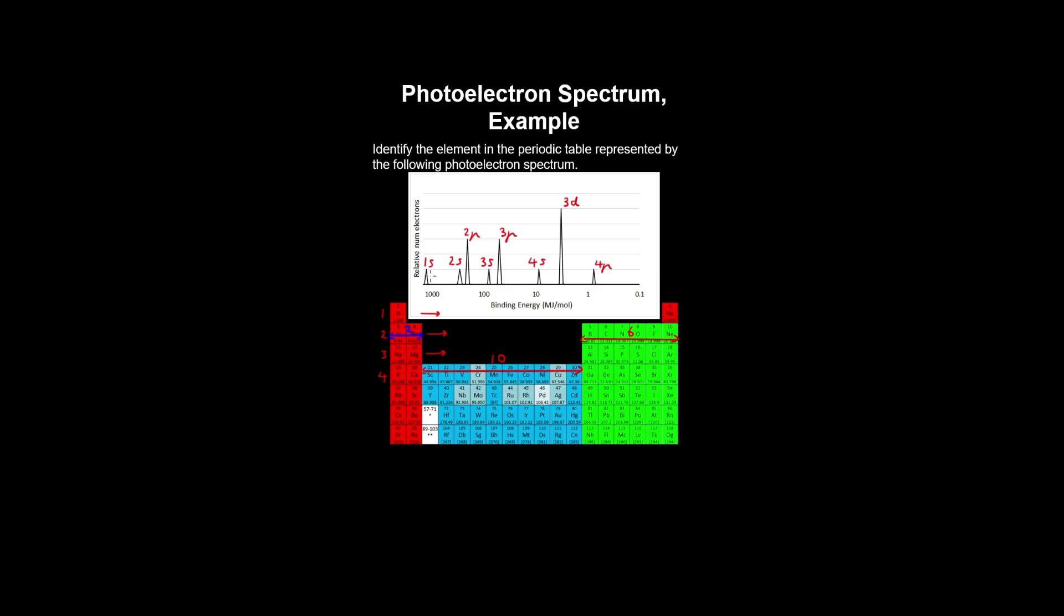Knowing this, we can write the number of electrons against each of those subshells. As we can determine, the 4P subshell in this case takes 2 electrons according to the scale of this graph.